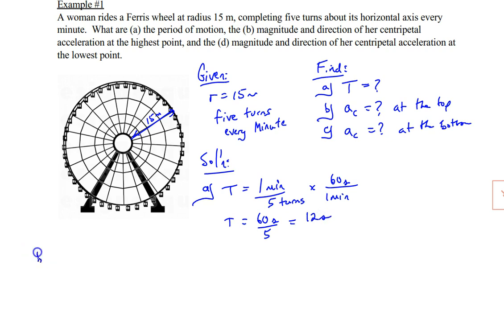Now moving on to part B. When she's at the very top of the point, let's draw her like right here. We want to know what her centripetal acceleration is going to be. Her centripetal acceleration, as we derived earlier, is the velocity squared divided by the radius. So what we need to do is figure out the velocity.